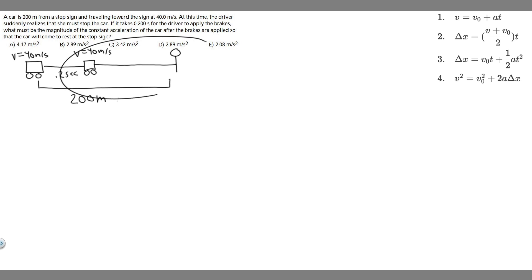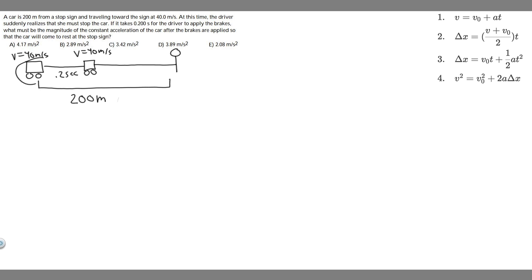We're given these options, and what we're trying to do is solve for the acceleration or deceleration. The way we're going to do this is first by drawing what's going on. So we have this car traveling at 40 meters per second. At this point, the driver is going to notice a stop sign. It's going to take them 0.2 seconds — they're going to travel for 0.2 seconds — and then they're going to press on the brakes, slow down, and eventually stop right at the stop sign. Their velocity at the end is going to be 0 meters per second. The total distance from where they start to the stop sign is 200 meters.